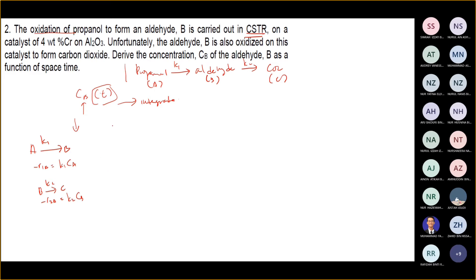So from there, you need to derive. Because CB — if you look at it, it is in the middle — it will be related to A. So from there, you first derive CA, because CB will relate back to CA.